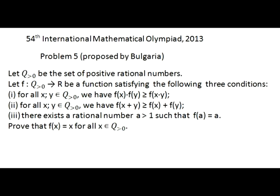First, for all pairs of numbers X and Y from Q positive, F of the product XY is not greater than the product of function values F(X) times F(Y). Second, for all pairs X and Y from Q positive, F of their sum is not less than the sum of function values. And third, there exists a rational number A greater than 1 such that F of A equals A. Prove that for all X from Q positive, F of X equals X.